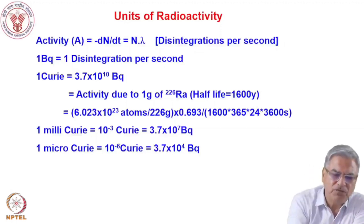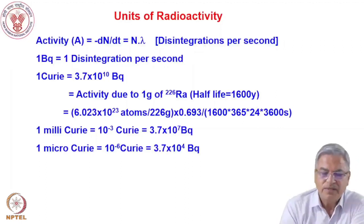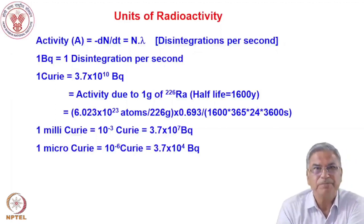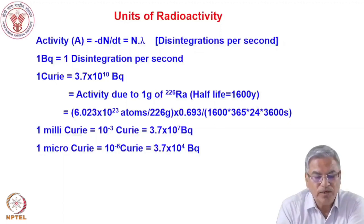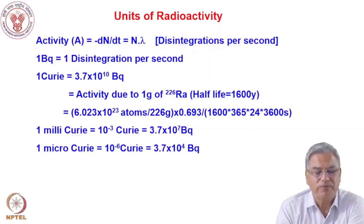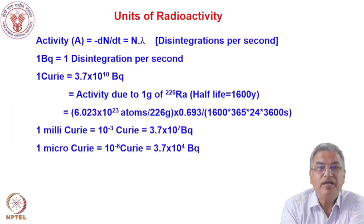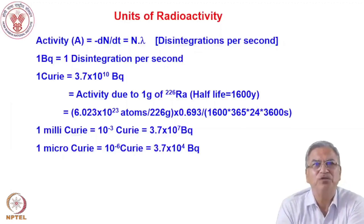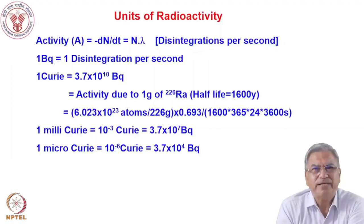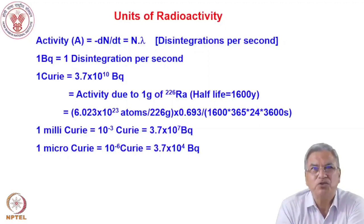The unit of activity is disintegrations per second. To honor the discoverer of radioactivity, one Becquerel (Bq) equals one disintegration per second. There is also the Curie (Ci), named after Madame Curie — one Curie equals 3.7 × 10¹⁰ Becquerels. This number comes from the activity of one gram of radium-226, which Madame Curie discovered; the activity of one gram of Ra-226 was defined as one Curie.